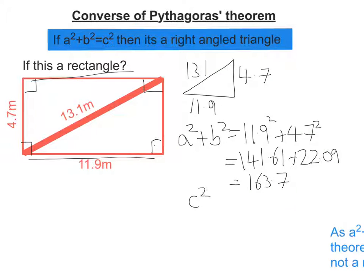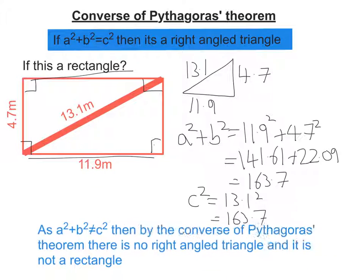Let's then take the longest side, 13.1, and square that, and we're going to get 163.7. So A squared plus B squared does not equal C squared. And now we need to write down our thoughts.